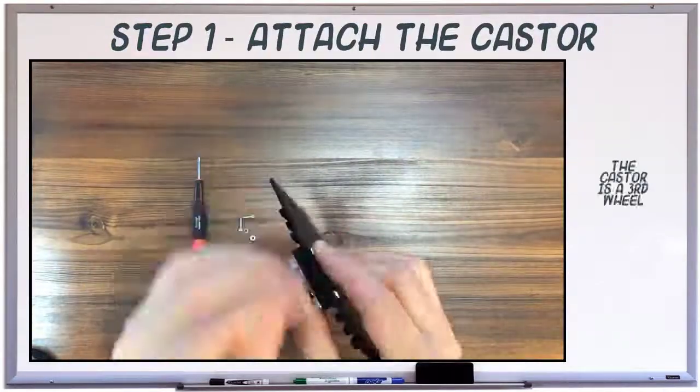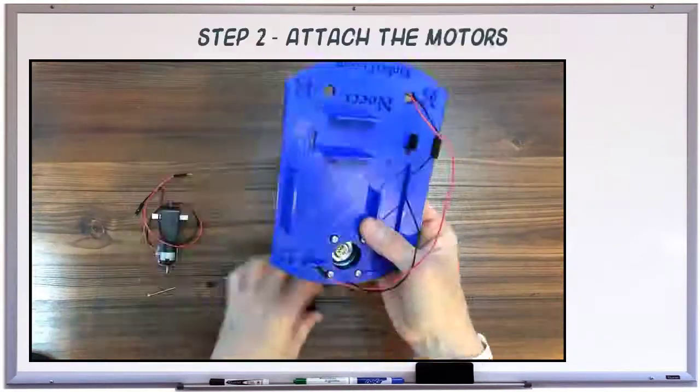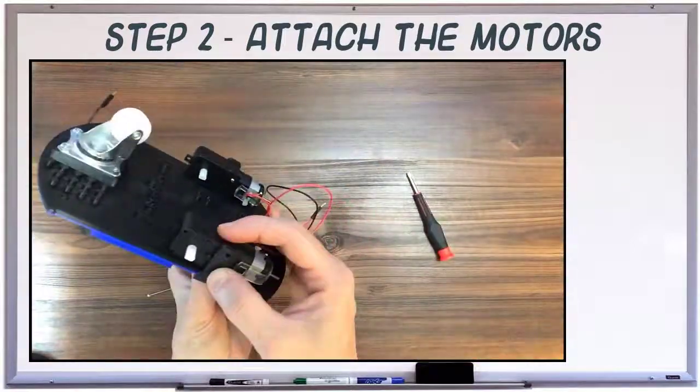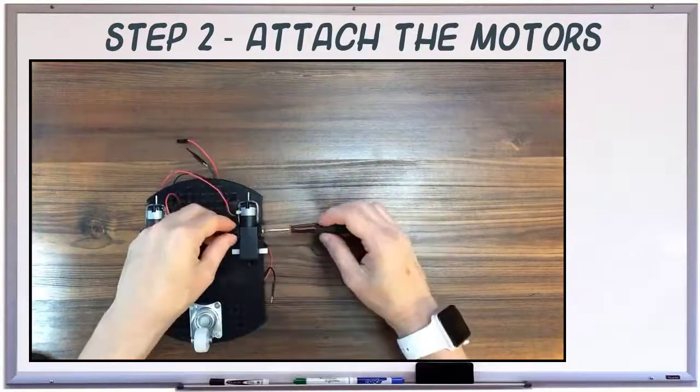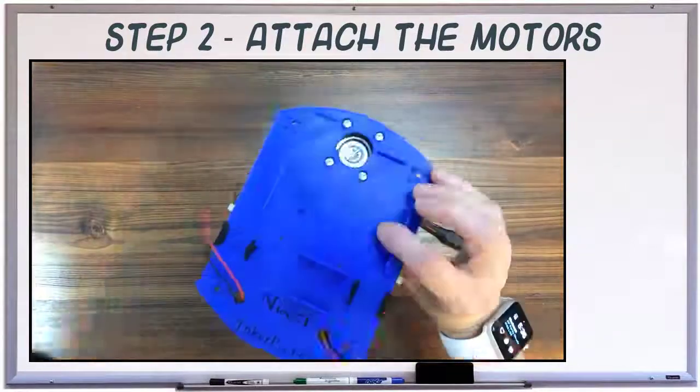The caster, or third wheel, is attached to the bottom. Next, we'll attach the motors. There are four brackets and two screws that hold the motors on. Feed the wires up through the bottom layer.